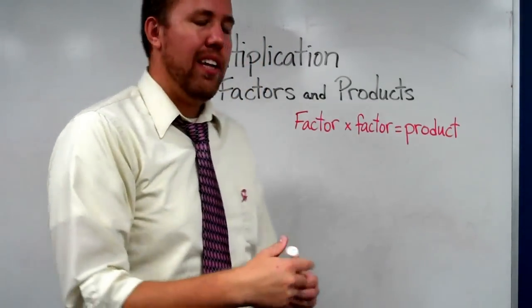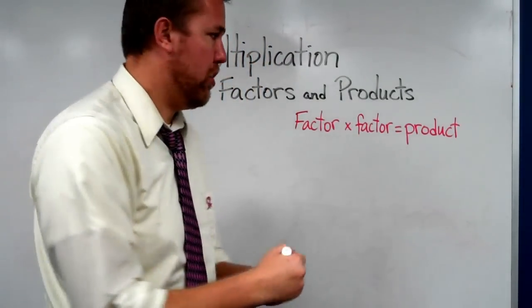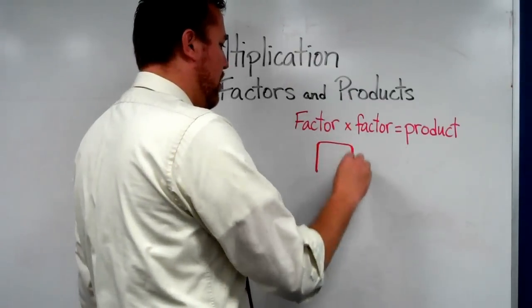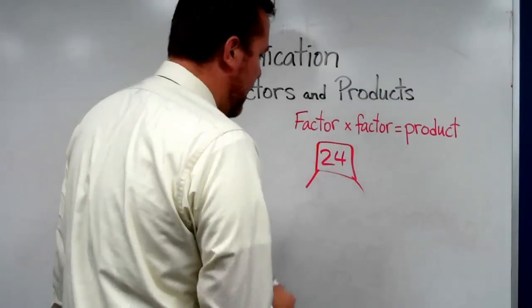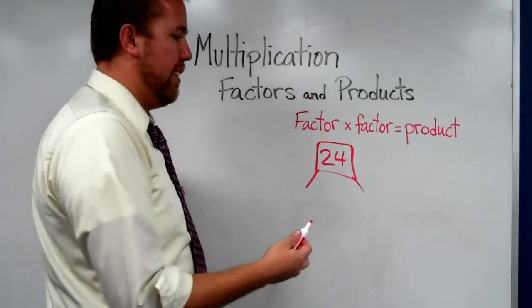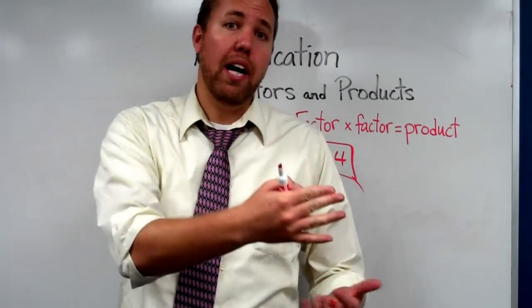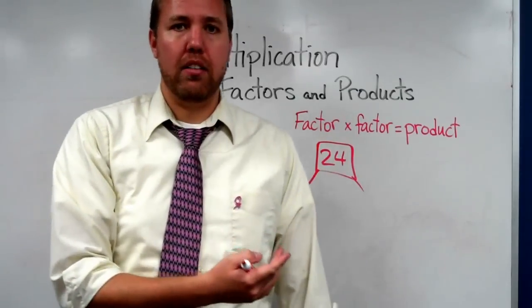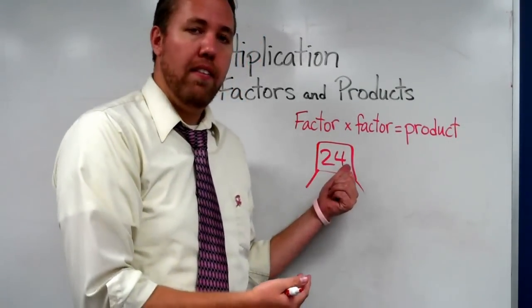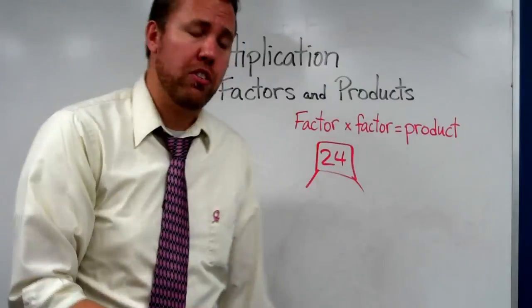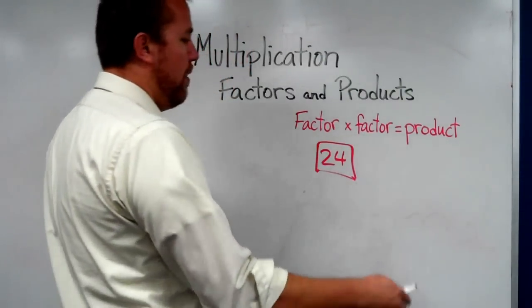So how we can look at factors: we have a product, and we look at what times what equals our product. Because any two numbers that multiply together to equal that product are factors of that. So since we're going to do more, we start off with the easiest one of all because 1 goes into every whole number.